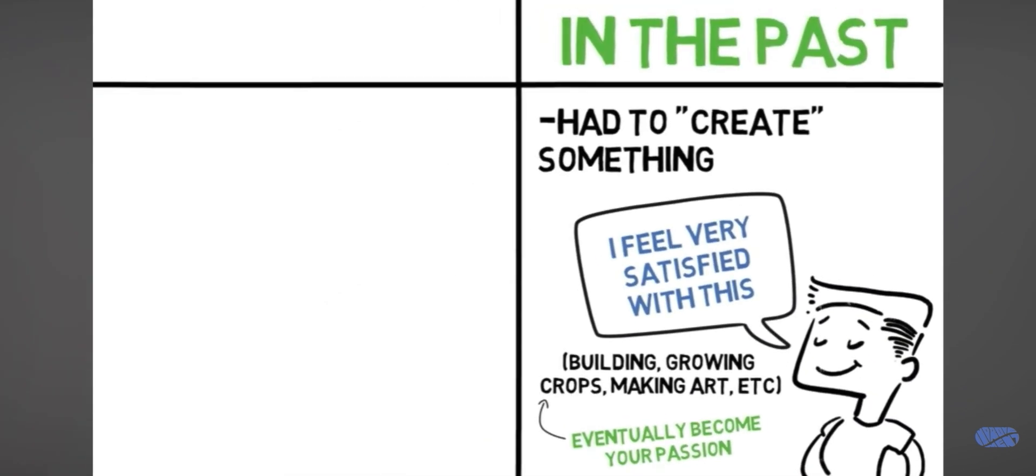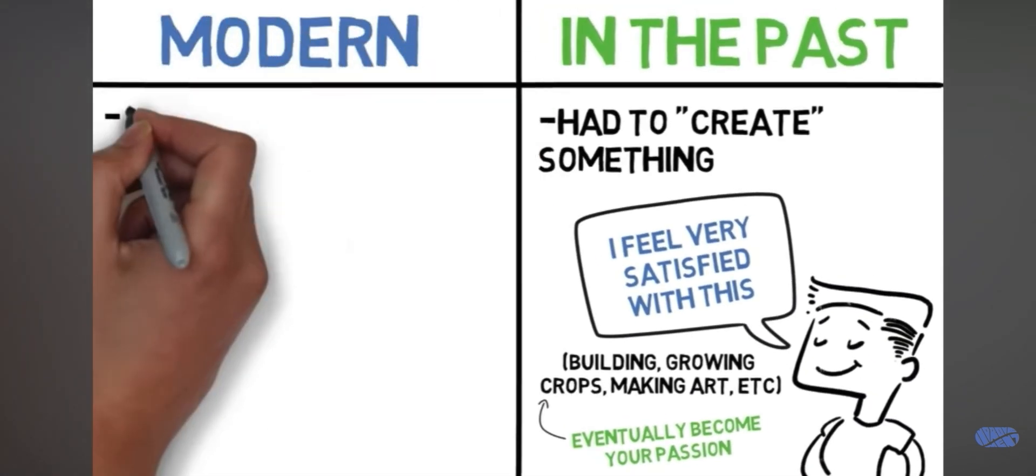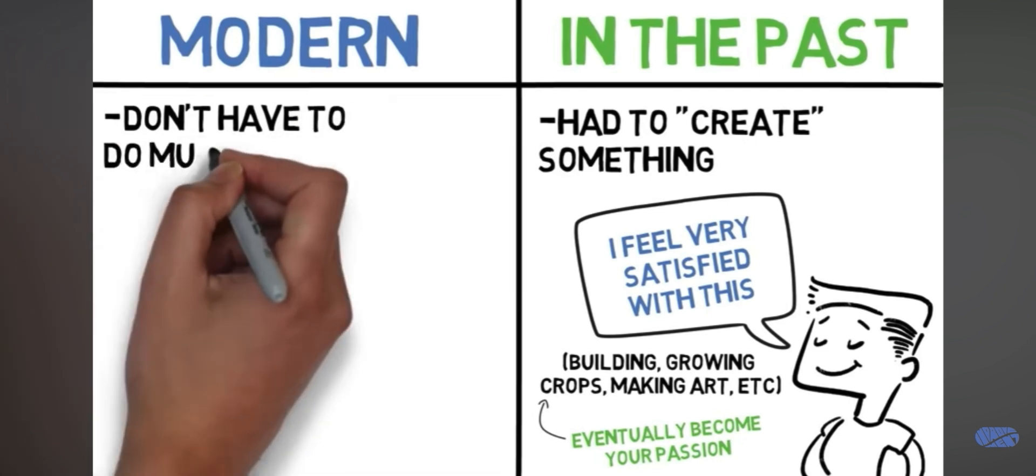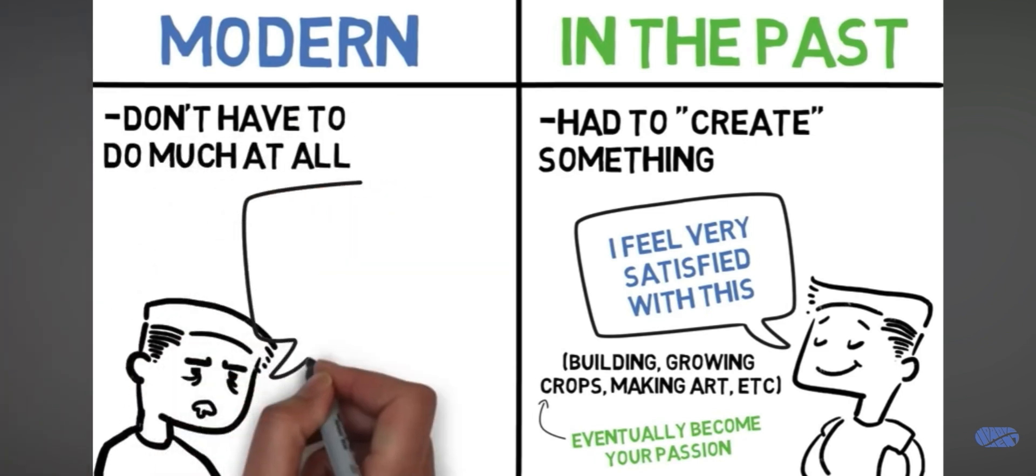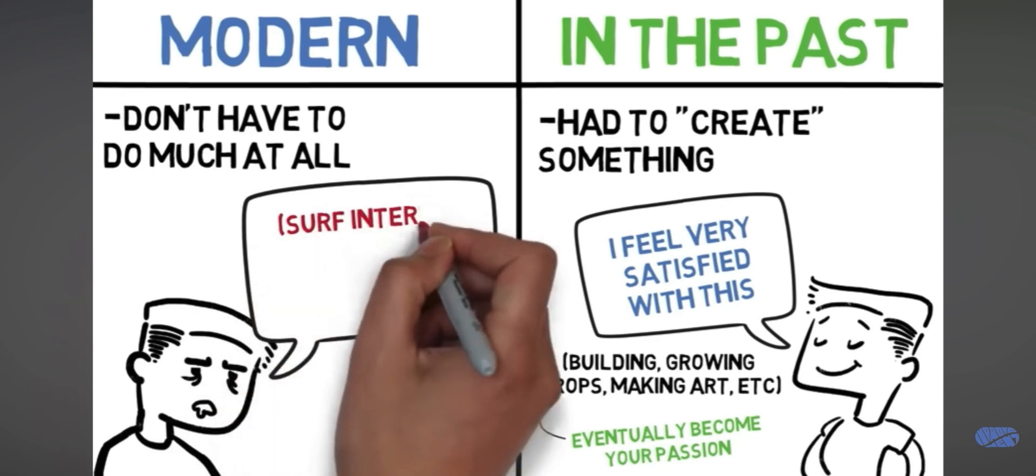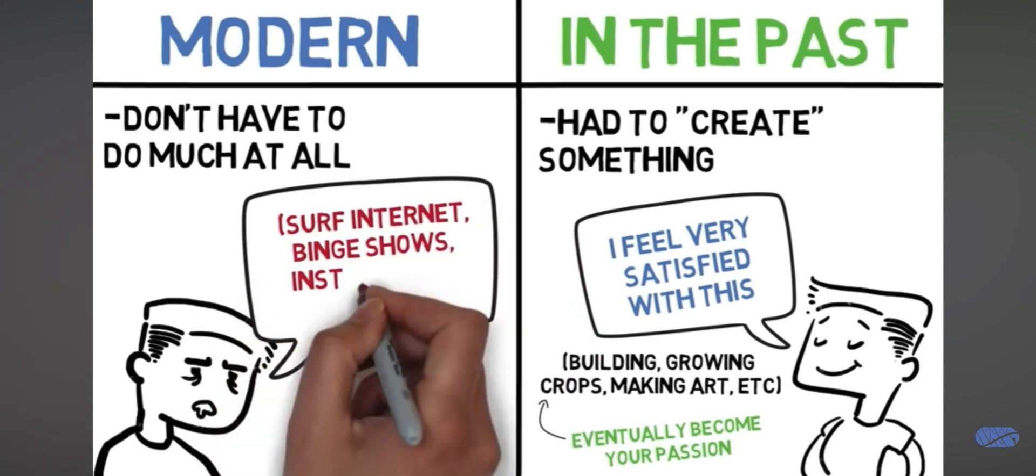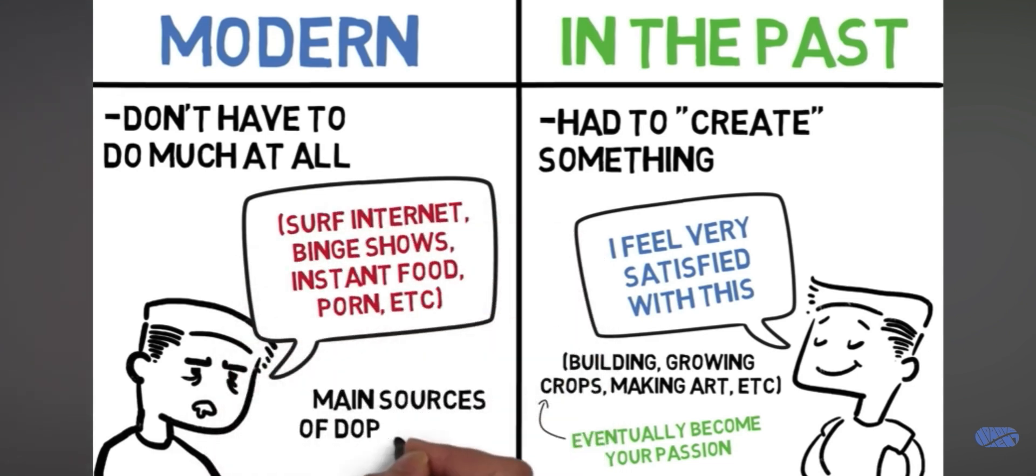But nowadays, it's a little bit different. We can now flood our brain with dopamine without having to do much at all. You can surf the web. You can binge watch some TV shows. You can order amazing foods for your front door almost instantaneously. And methods like this have become the main sources of dopamine for the majority of people.